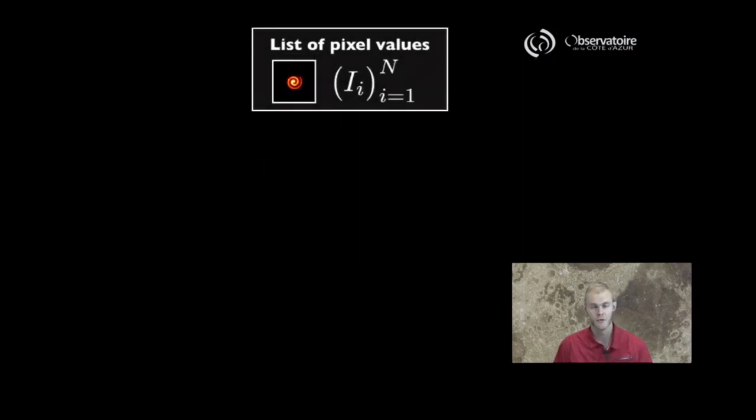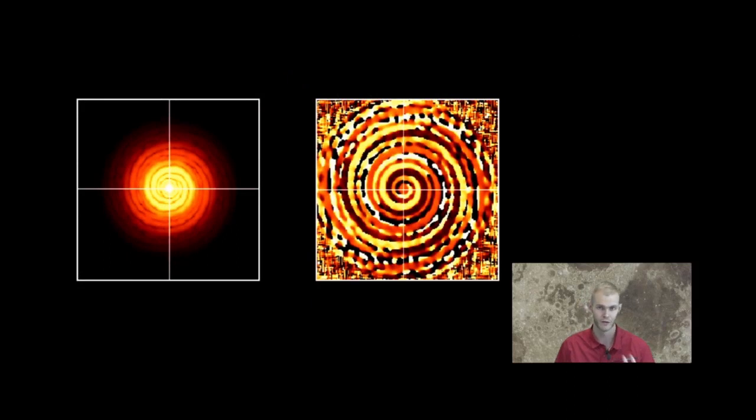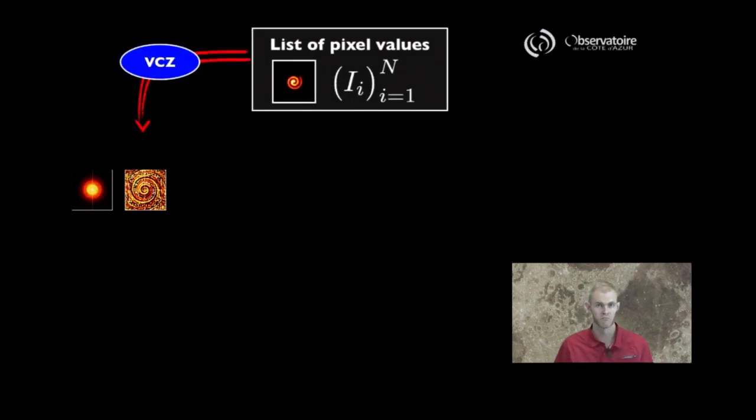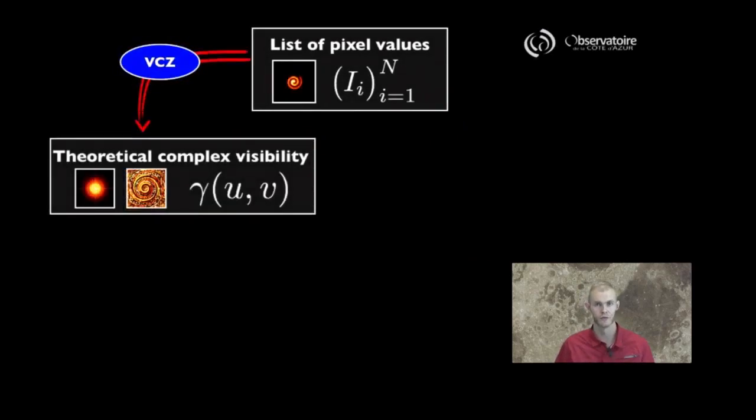Now we can use this image or this list of pixel values. We can use this in order to predict what the theoretical complex visibility should be, simply relying on our good friend, the Van Cittert-Zernike theorem. So here it is again for whatever image I've plugged into as the input of my data processing software. This is what my complex visibility should theoretically be for the entire UV plane in terms of amplitude and phase. And this transition is really direct application to the Van Cittert-Zernike theorem.